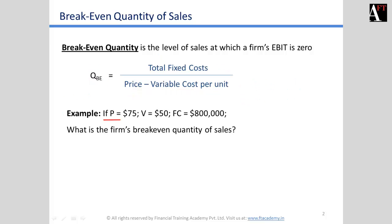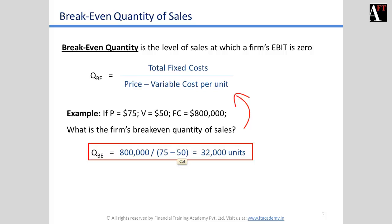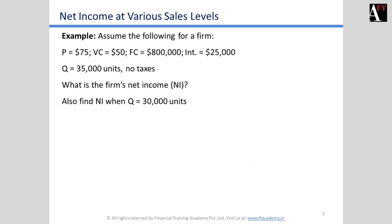For example, if the price is $75, variable cost is $50, and fixed costs are $800,000, what is the firm's breakeven quantity of sales? Applying the formula directly: total fixed costs of $800,000 divided by contribution per unit of $75 minus $50, which equals $25, gives us a breakeven quantity of 32,000 units.